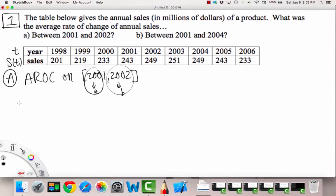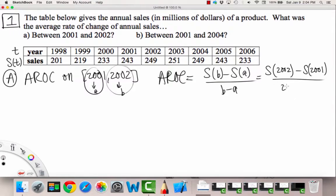Let's write our formula for AROC. We have average rate of change is equal to F of B. Well, in this case, it won't be F, but it'll be S instead. So S of B minus S of A, because that's the function we're using, over B minus A. So in this sense, we have S of B is now 2002, minus S of A, which is 2001, over 2002 minus 2001.